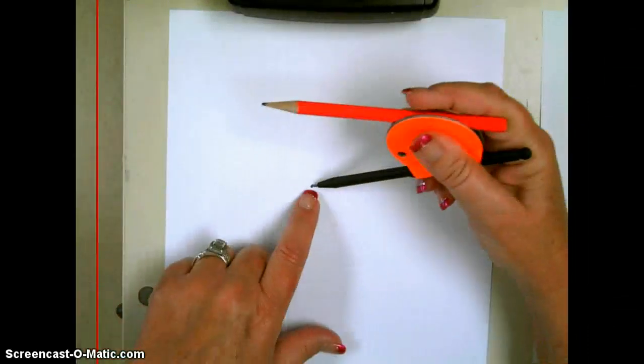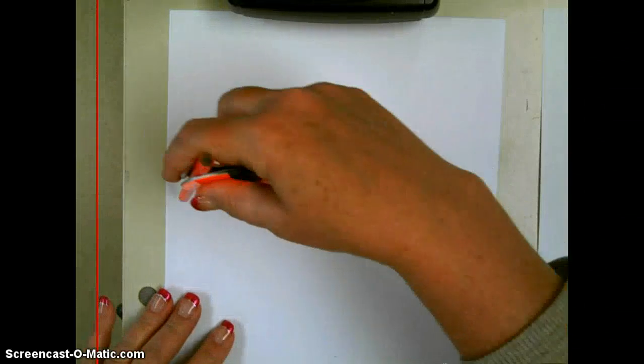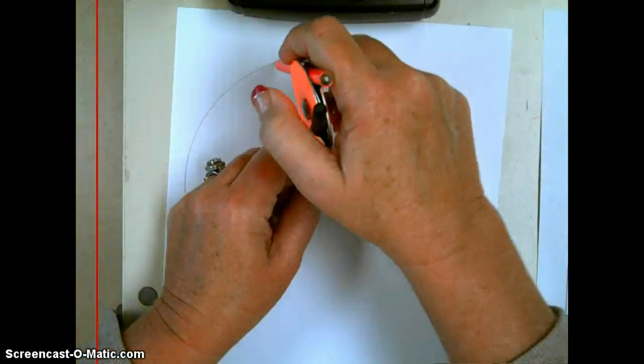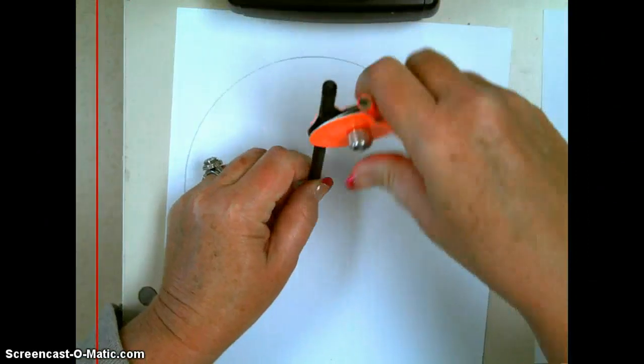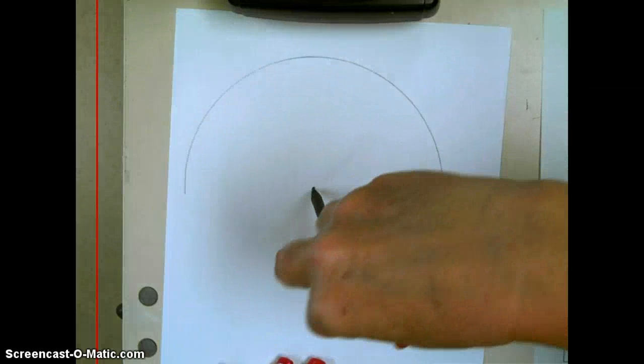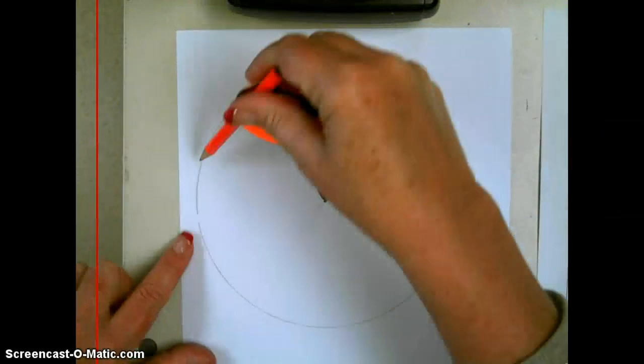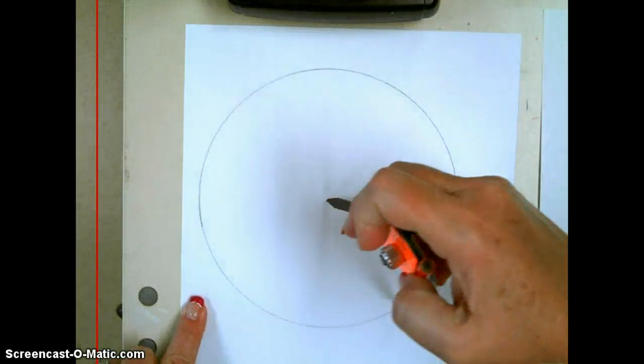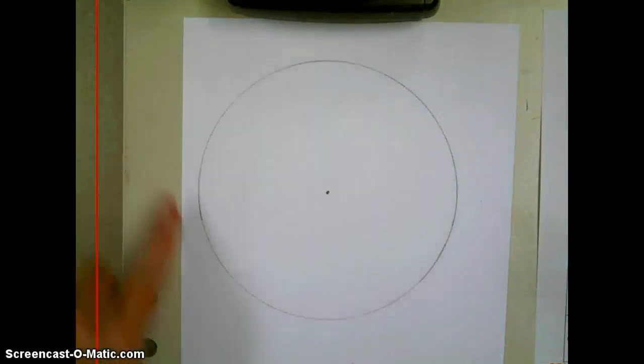It's very important to make sure that the point of your compass does not slip off this point. When you start drawing, you want your circle to meet at the very end. If your compass starts to slip away from that point, then when you get to the end, your circle will not meet. So it's very important not to let that point slip. And there, I've just been able to make my circle.